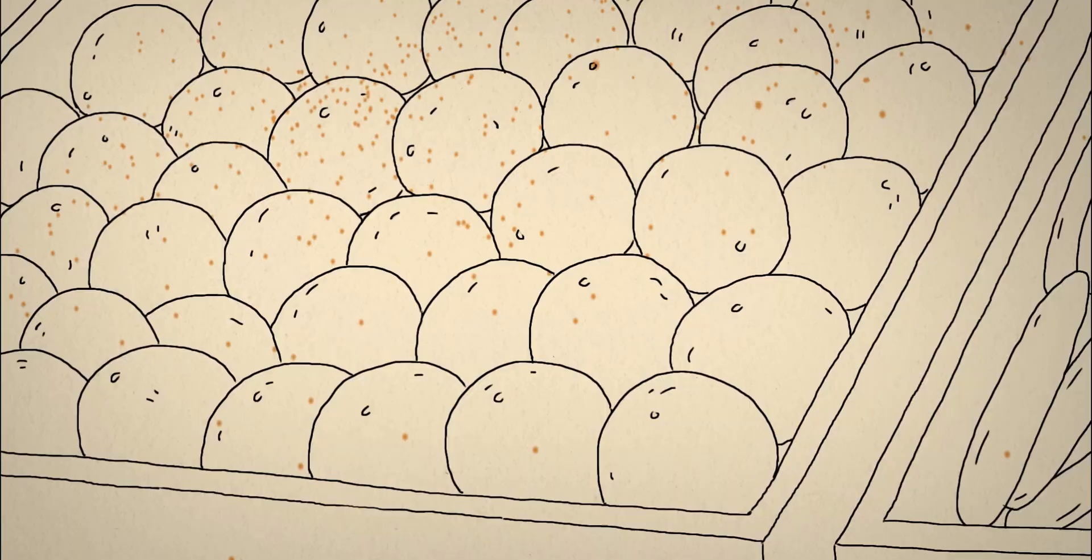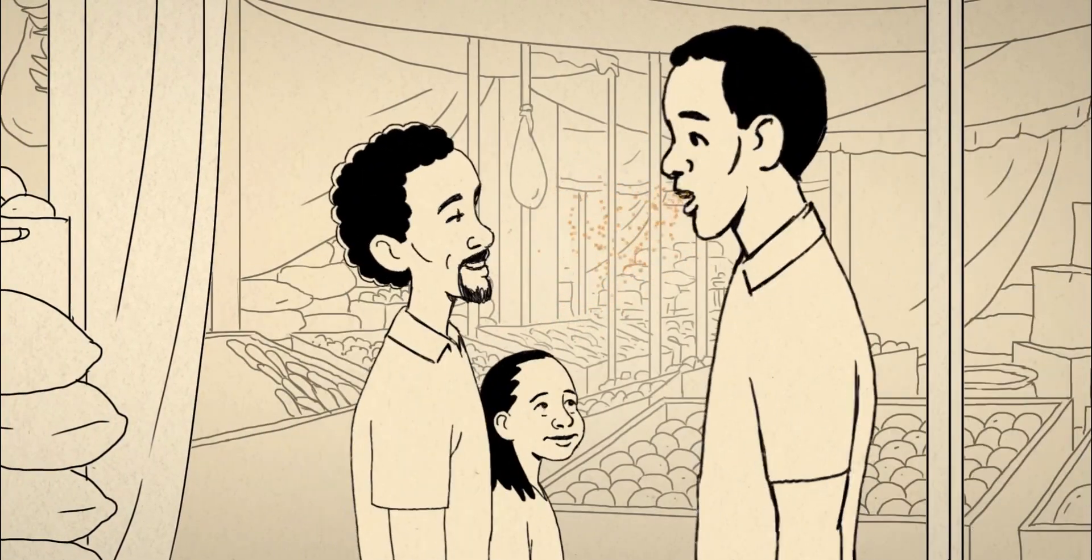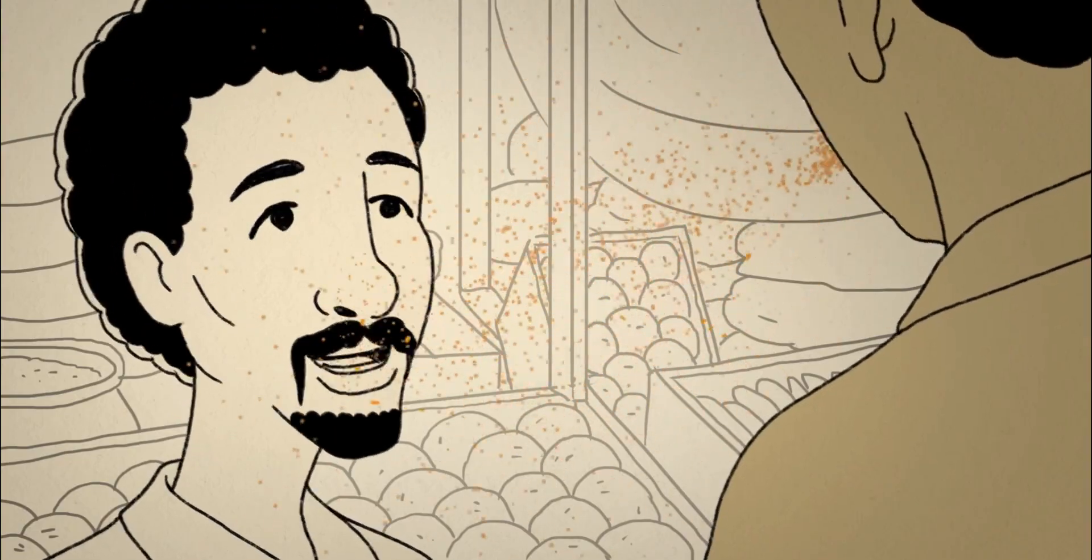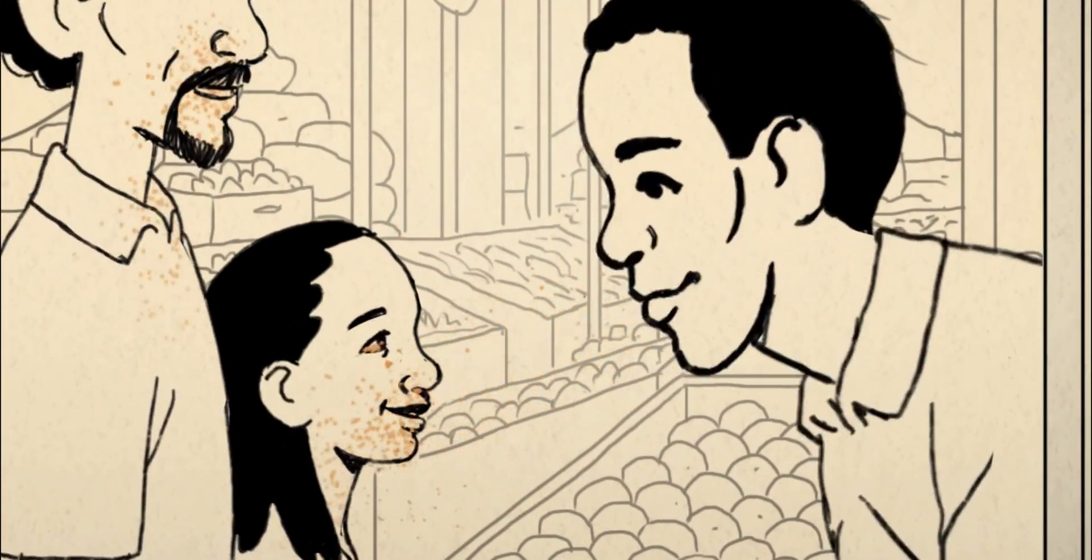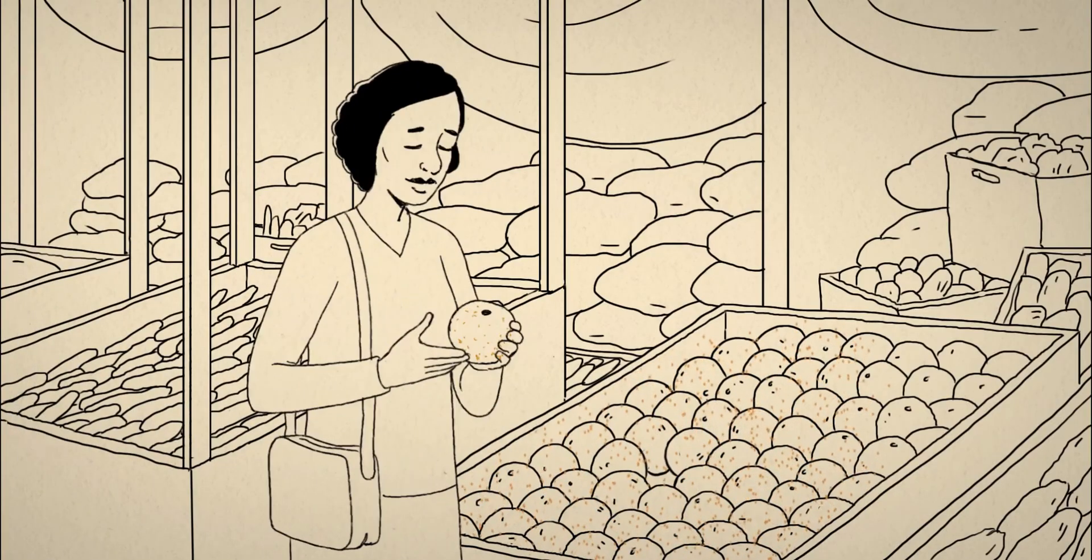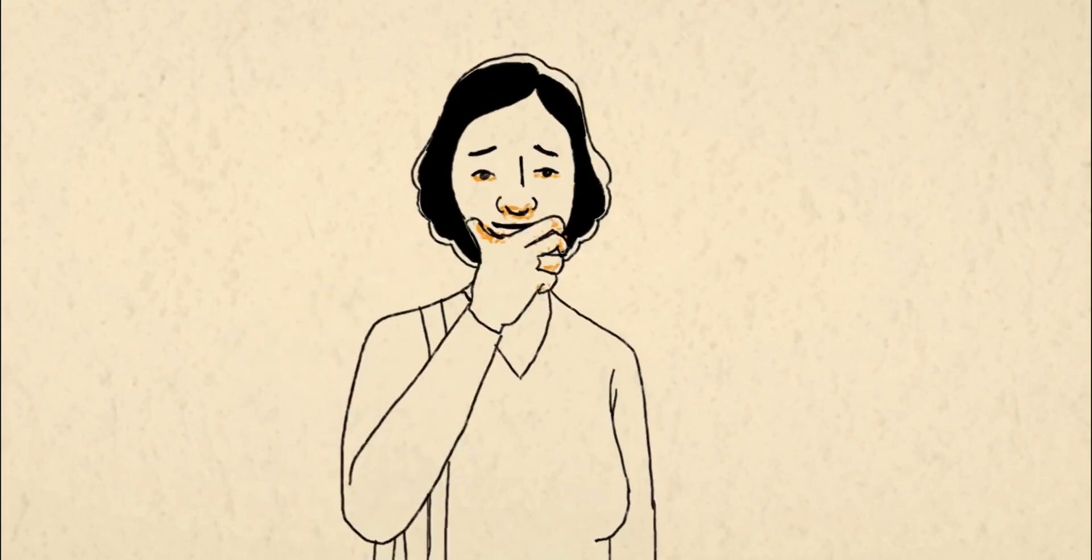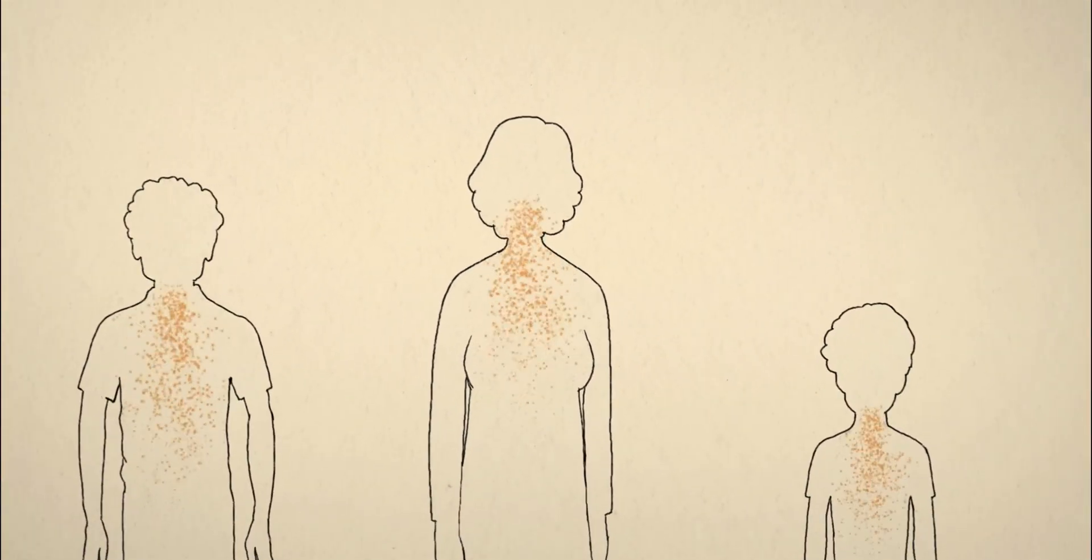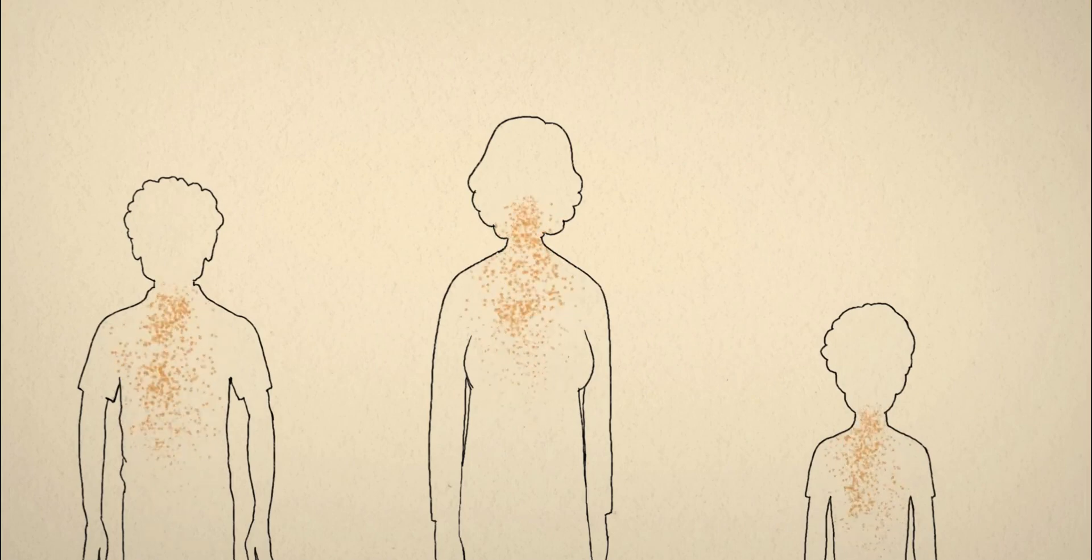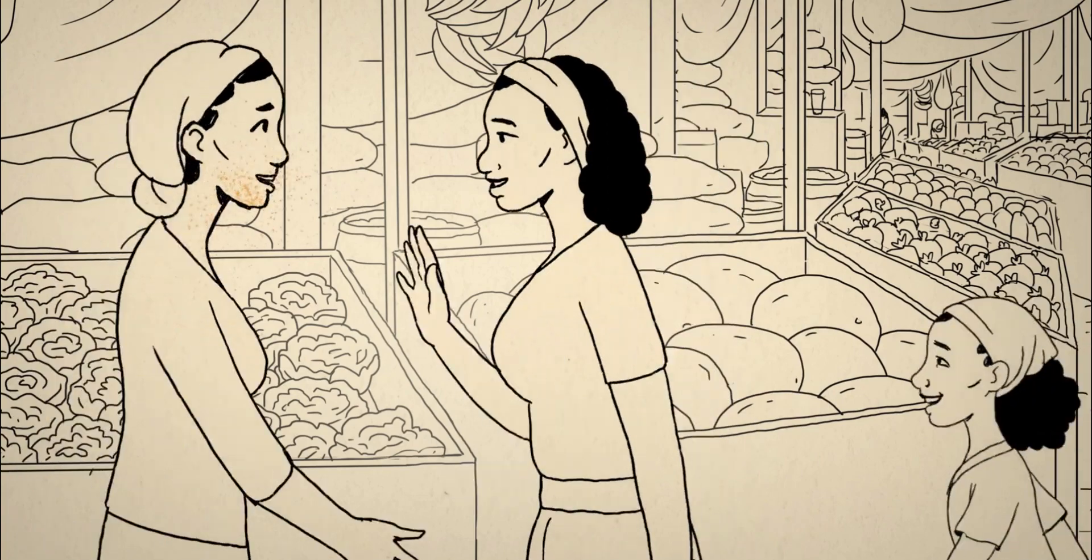Without realizing, the viruses enter our body. We breathe them in, they land in our mouth, nose, and eyes, and we pick them up on our hands then touch our eyes, nose, or mouth. In these ways, the viruses enter our body and infect us. Most people don't get very sick with coronavirus.